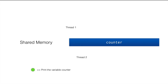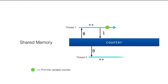Let's look at the timelines. Thread one starts, reads the counter, increments it, writes the incremented value — which is 1 — back to the counter, and prints it (the green dot represents the print statement). While thread one is doing its work, thread two comes into play. Thread two reads the counter, but at that moment thread one hasn't written back the value 1 yet. So thread two also reads it as zero and increments it, writing 1 back. This is the problem of thread two reading the value before thread one has updated it, which is why we see duplicate numbers.